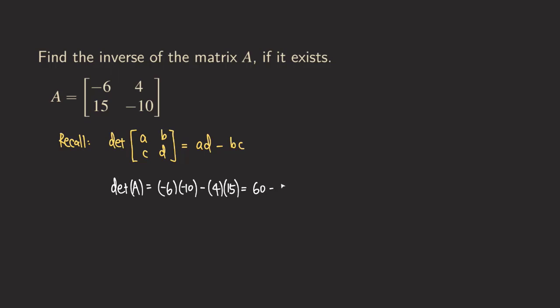And then what is 4 times 15? That's also 60, and so we are going to get 0. So what happens? The inverse does not exist. So the inverse of A does not exist.